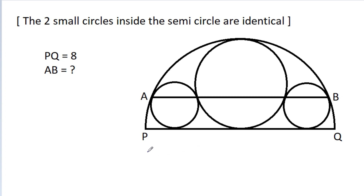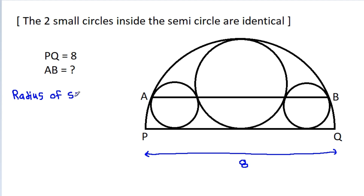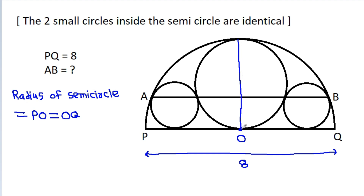In this video, we have been given that PQ is 8, and we have to find AB. The radius of the semicircle: suppose the center of the semicircle is O, then the radius will be equal to PO, which equals OQ. Suppose this point is X, then it will also equal OX, which equals PQ divided by 2, and that equals 8 divided by 2, which is 4.